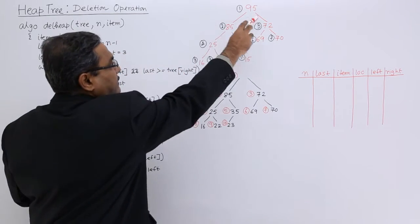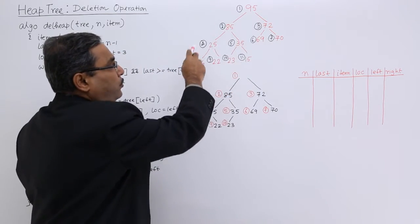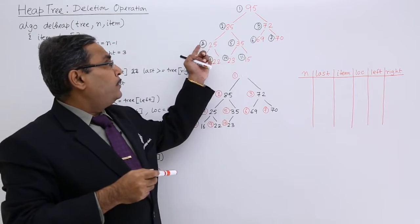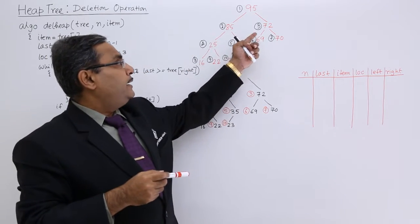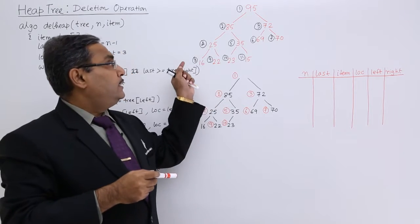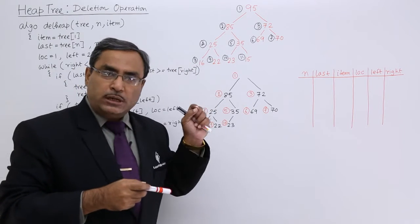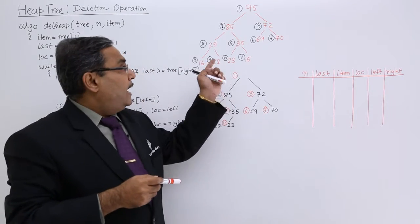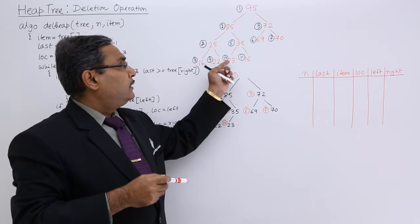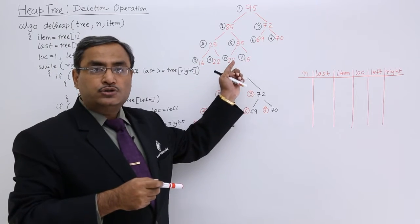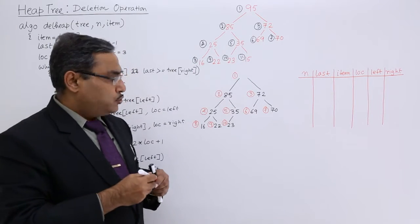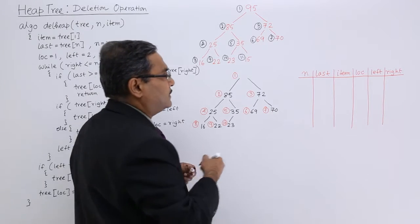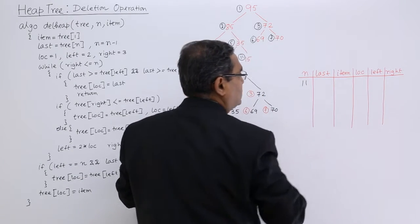This is my tree. We are having 11 locations. Whatever is written in black ink, they are the location numbers of the array tree, and these are the respective values at those locations. The value of n will be 11 at first, so 11 has been passed.